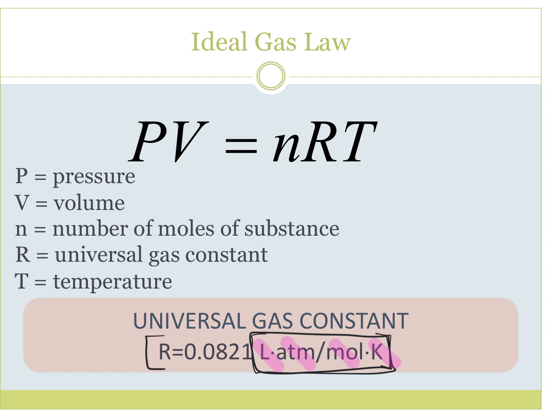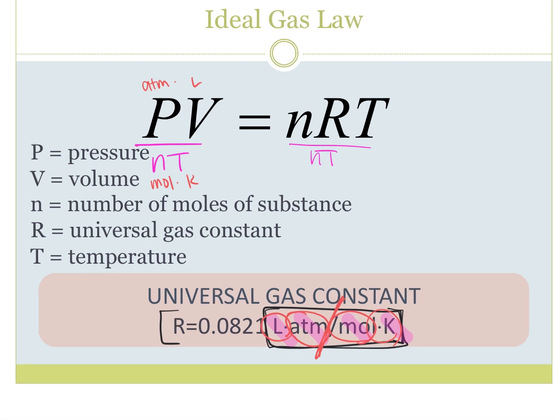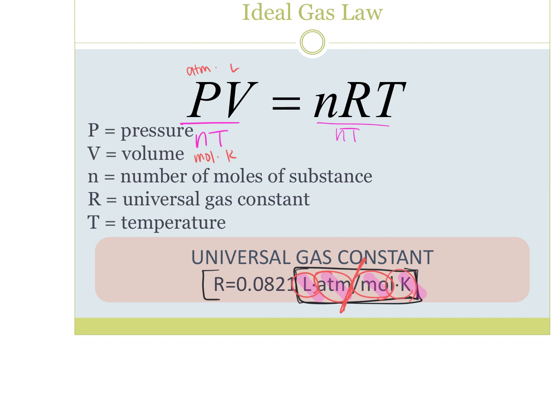The way that this value came about is that if I wanted to solve for R, I would divide this side by NT, divide this side by NT, and this is measured in atmospheres times liters, moles, and Kelvin. So that's where this came from—atmospheres times liters divided by moles times Kelvin.